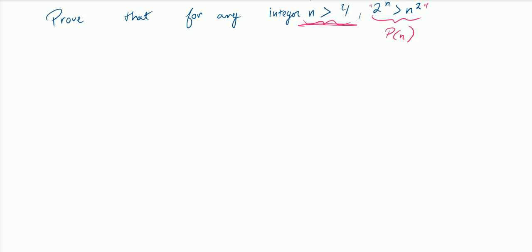This is another proof using proof by induction. Same two steps: the basis step, and then the inductive step. In this case, the smallest possible value of n I can use for P is 5, because n is strictly greater than 4, so it can't be 4. The following integer after 4 is obviously 5.